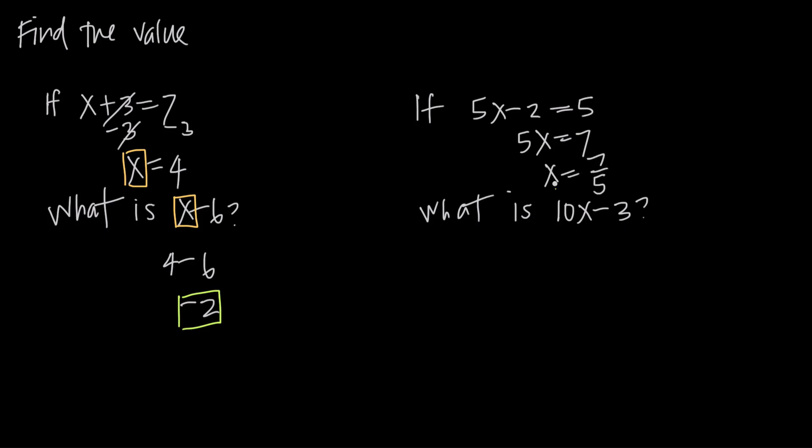Now we've solved for x. We know x is 7 fifths, so we get 10 times 7 over 5 minus 3. 10 times 7 is 70, so we get 70 over 5 minus 3. 70 divided by 5 is 14, so we get 14 minus 3, which is 11. So the value we were looking for was 11. You see how we had to solve the first equation to find a value for x, and then substitute that value into the second equation to find the final value.